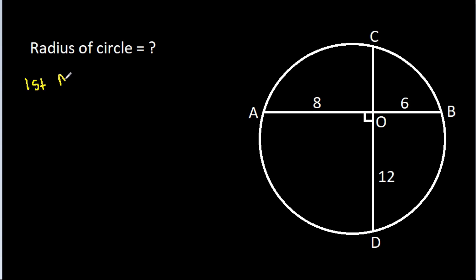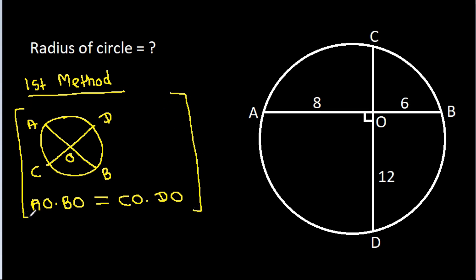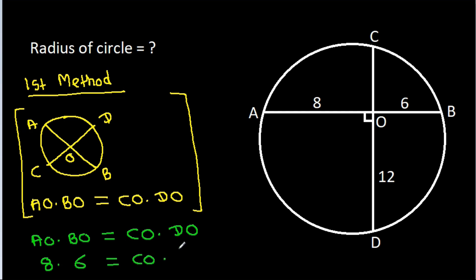The first method: in any circle, if two chords AB and CD intersect at O, then AO times BO equals CO times DO. So in this circle, AO times BO equals CO times DO. AO is 8, BO is 6, and DO is 12. So CO equals 48 divided by 12, which is 4.